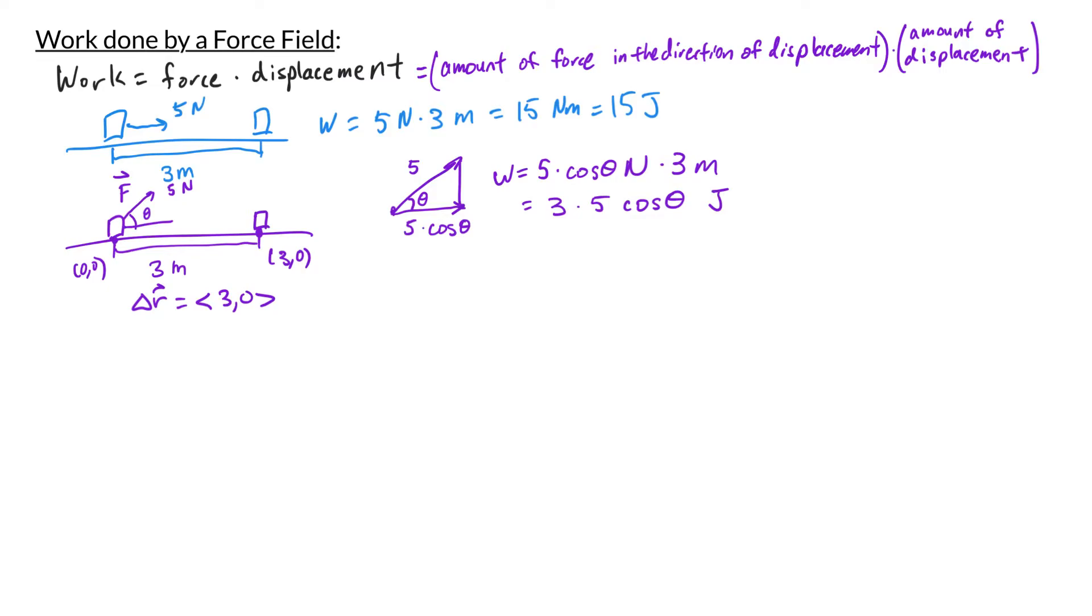If we return to our calculation for the work, we can see here that work is equal to 3 times 5 times cosine theta. The 3 here is just the magnitude of delta r. The 5 is the magnitude of our force. And then I have cosine theta, where theta is the angle in between. And this expression looks like a dot product.